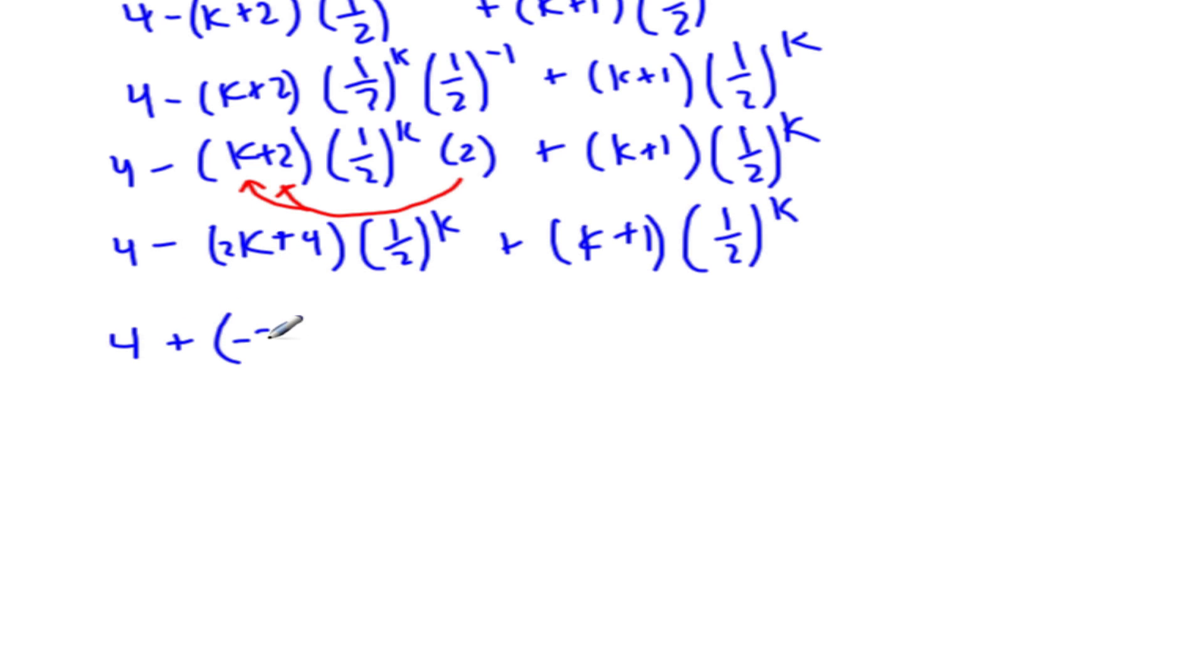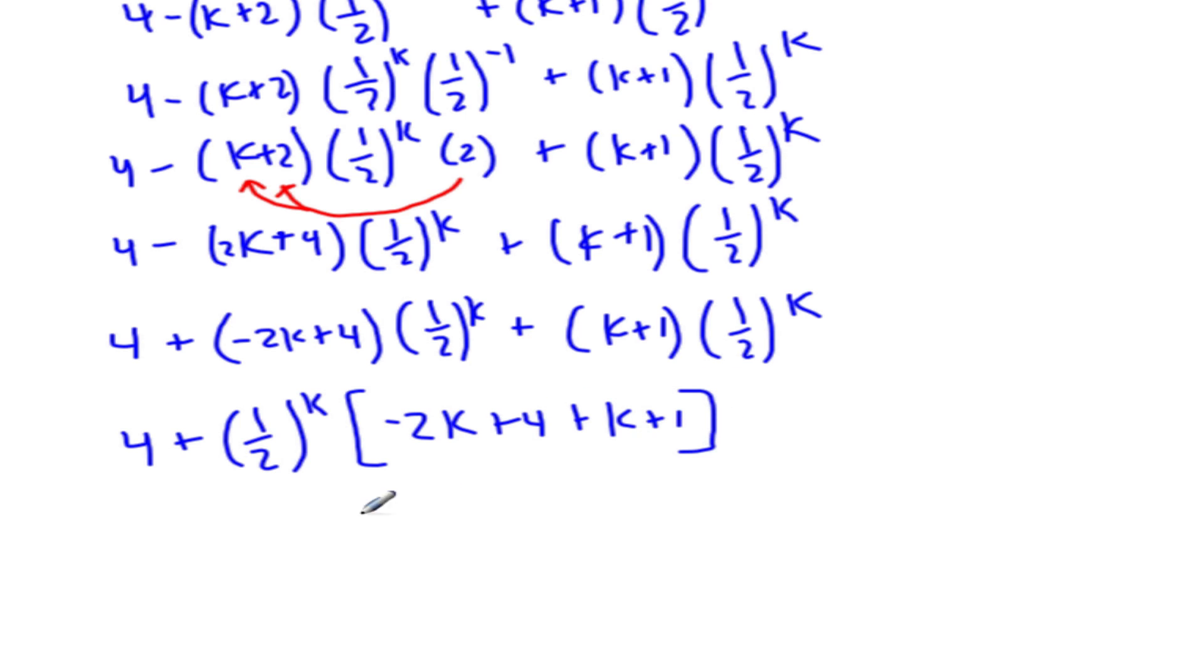So that's negative 2k plus 4, and 1 half k plus k plus 1, 1 half k. So now I can factor out that 1 half to the k.